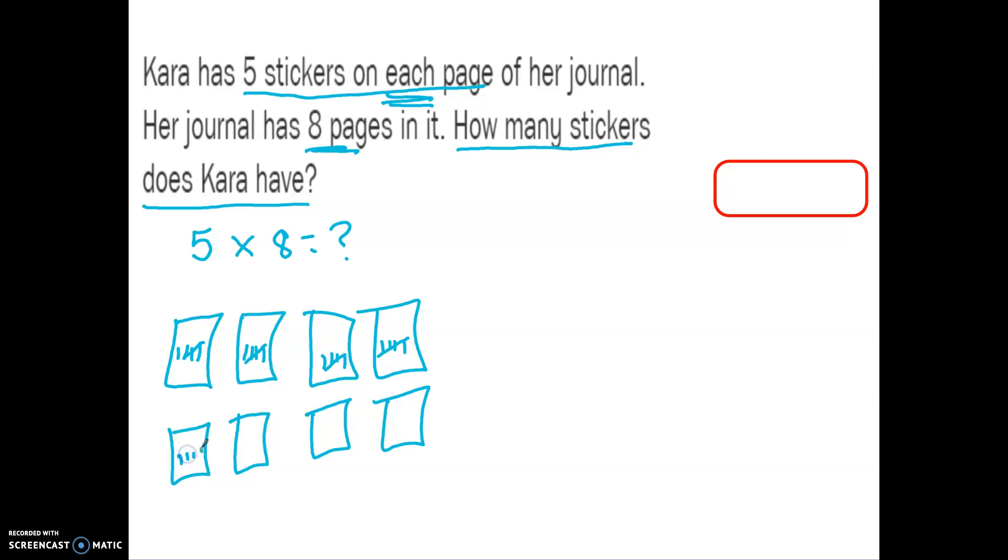Nice and neat and tidy. I'm going kind of quick now, so it's probably not my best work. Then, let's go ahead. 5 times 8. I've got 8 groups of 5. So, that's 5, 10, 15, 20, 25, 30, 35, 40. So, my answer is going to be 40 stickers. All right. Very good.